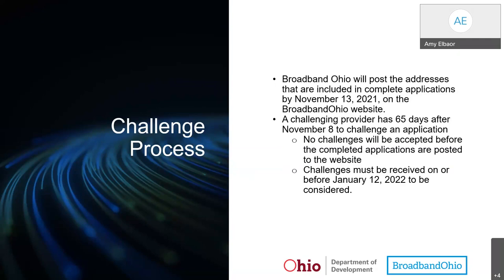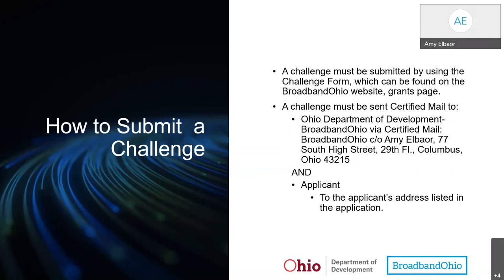After November 22nd, when the remedy period ends for incomplete applications, all applications found to be complete will have their addresses posted all at once. No challenges will be accepted before the completed applications are posted to the website, and challenges must be received on or before January 12th. A challenge must be submitted using the challenge form found on the Broadband Ohio website grants page. A challenge must be sent certified mail to the Ohio Department of Development, as well as to the applicant at the address listed in their application.